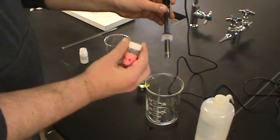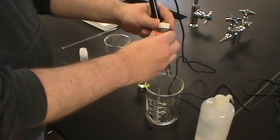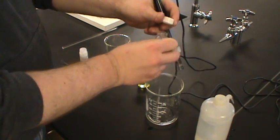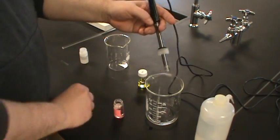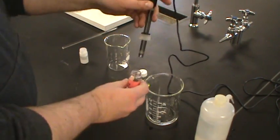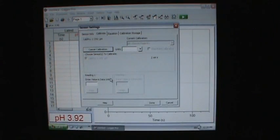Dab it dry. And we're going to use the pH 4 calibration buffer first. It really doesn't make that much difference which one you use first. So we're ready to go. And so I just put it in the pH 4 buffer. And you see that voltage dances around a little bit. As soon as that voltage stabilizes, we can come to this box.